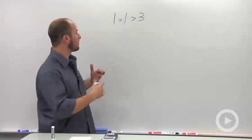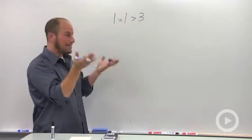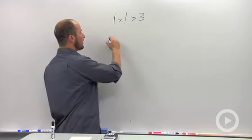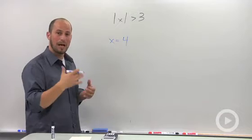Where this would work. We need a number where when the absolute value is taken of it, it's going to be greater than 3. So if we're thinking positive numbers, x equals 4, absolute value of 4 is 4, 4 is greater than 3.